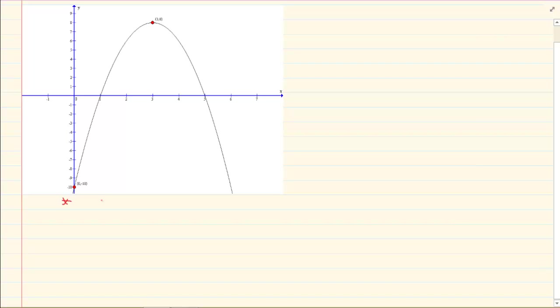When they give you the turning point and a point, then the formula you use is f(x) = a(x - p)² + q.